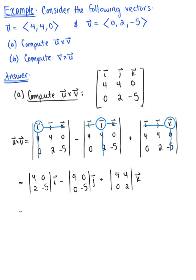Now applying that crisscross multiplication, or that 2 by 2 definition of our determinant, we can obtain the components of u cross v. So we have 4 times negative 5 is minus 20, minus 0 times 2 is 0, i hat, minus 4 times negative 5 is minus 20, minus 0 times 0 is 0, j hat. And last but not least, we have plus 4 times 2 is 8, minus 4 times 0 is 0, k hat.